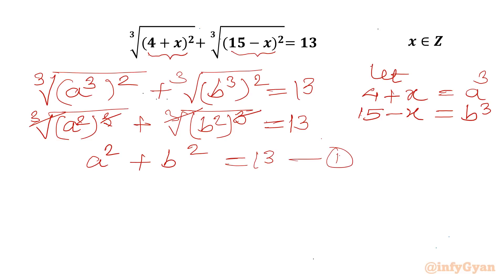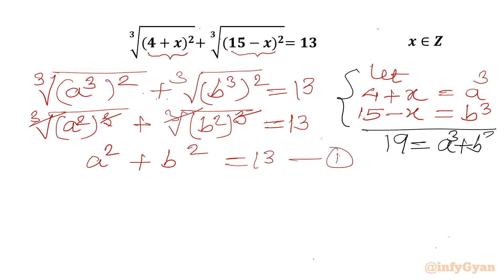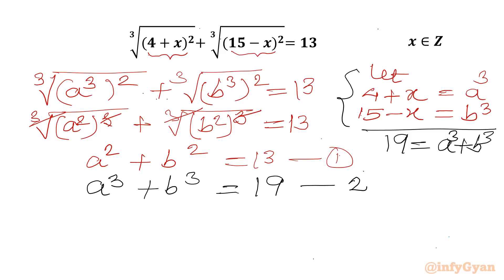Now from the substitution equations, if I add these two, I will get a³ + b³ = 19. So a³ + b³ = 19. We will call this Equation 2.